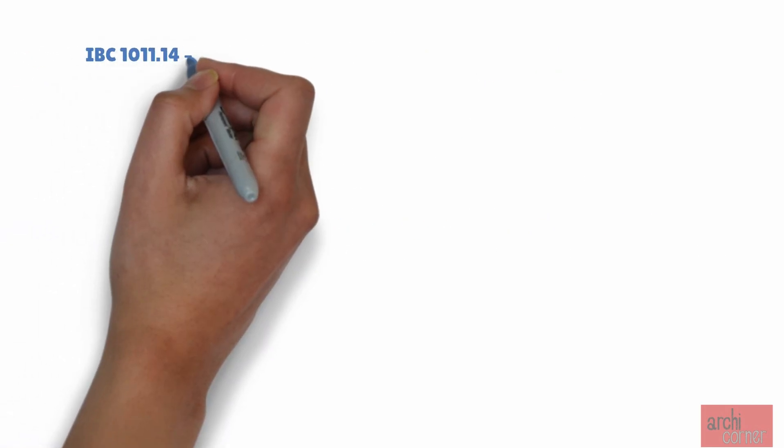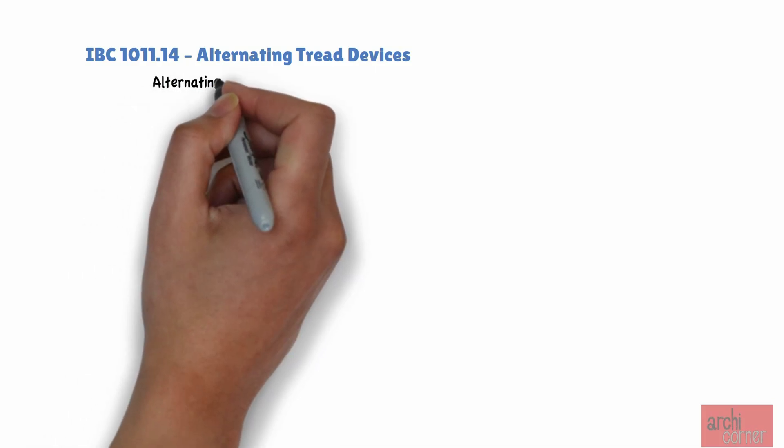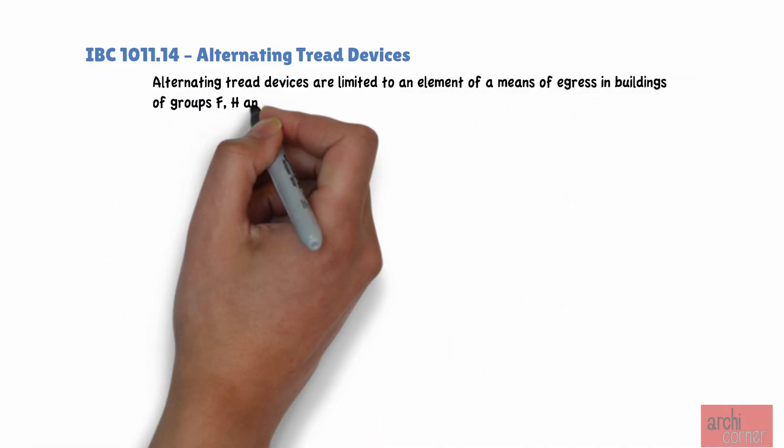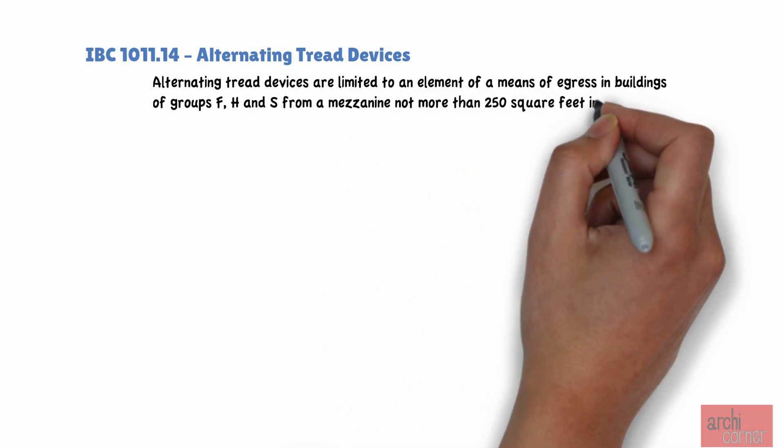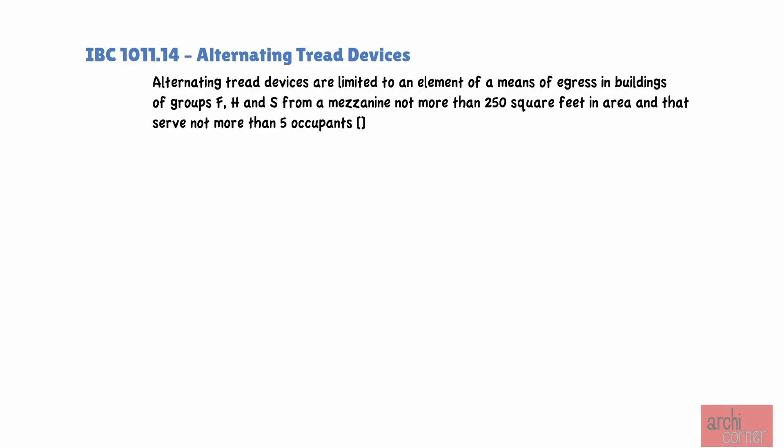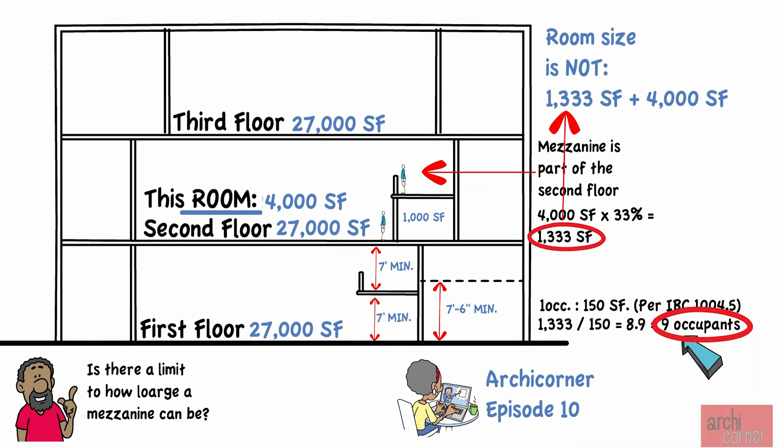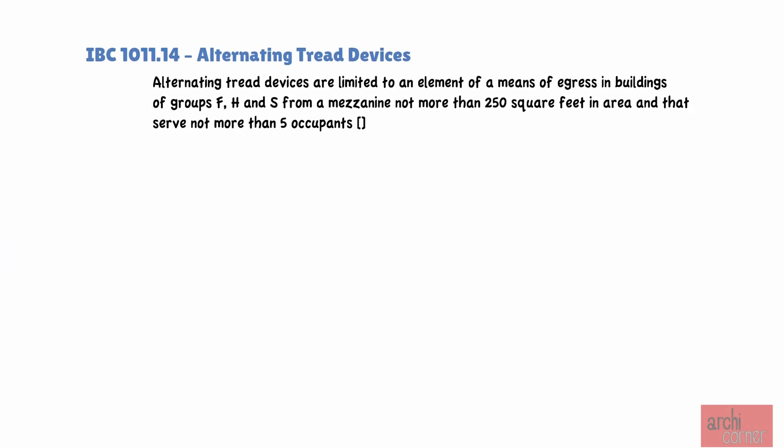And the last thing that mezzanines are allowed to have, drumroll here, for IBC section 1011.14, alternating tread devices. It partially reads, alternating tread devices are limited to an element of a means of egress in buildings of groups F, H, and S from a mezzanine not more than 250 square feet in area and that serve no more than 5 occupants. Since our building is a B building, we cannot take advantage of this. And even if our building was an F, H, or S occupancy, our occupancy load is higher than 5 occupants, so we still could not take advantage of this. And we are also over 250 square feet, so no matter how we slice it, we cannot use alternating tread devices.